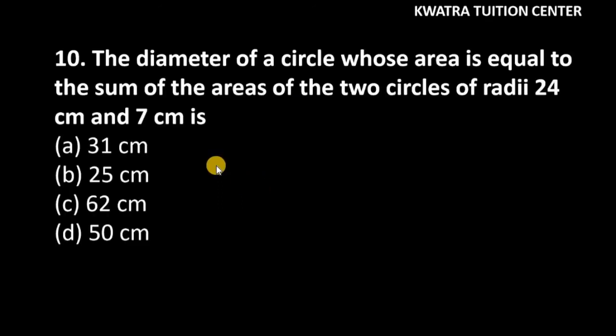Let's move on to question number 10. It says the diameter of a circle whose area is equal to the sum of the areas of the two circles of radii 24 cm and 7 cm. So we have to find the diameter of the area of a circle whose area is equal to the sum of the areas of two circles.